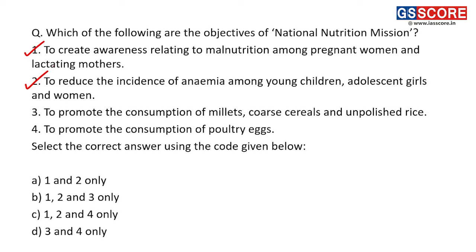The National Nutrition Mission aims to reduce anemia among young children, adults, and girls and women. The third statement — to promote consumption of millets, coarse cereals, and unpolished rice — is not an objective of this mission. The fourth statement — to promote consumption of poultry eggs — is also not an objective. Only the first and second statements are correct, so the answer is A — 1 and 2 only.